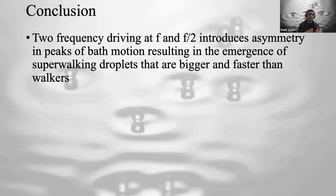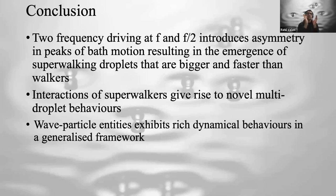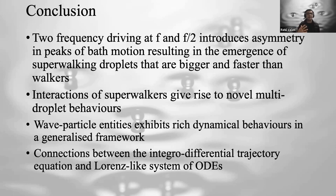In conclusion: two-frequency driving at frequency f and f/2 with a phase difference introduces asymmetry in the bath motion, enabling bigger droplets to walk much faster — these are superwalkers. Interactions between superwalkers produce rich dynamical behaviors, and exploring a generalized theoretical framework beyond experimental parameters reveals even richer dynamics. Finally, there appear to be interesting connections between the droplet's equation of motion and classic chaotic systems like the Lorenz system of ordinary differential equations.